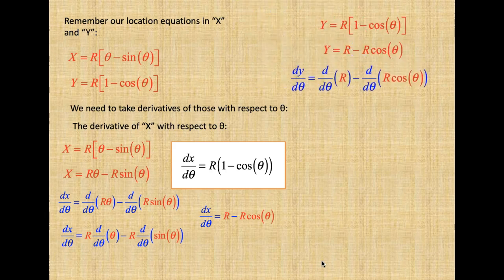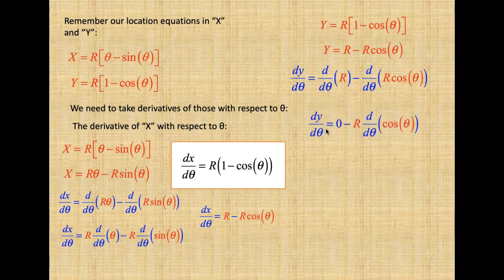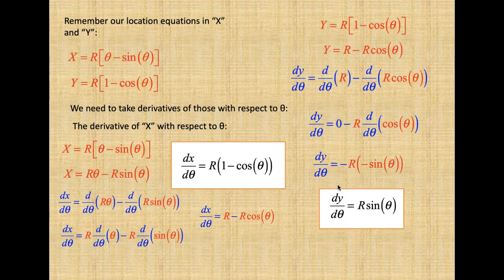For y, we have y = R(1 − cosθ). Multiplying through: R − R·cosθ. Taking the derivative of both sides, the derivative of R with respect to θ is 0, and the derivative of R·cosθ is R·sinθ, but with a negative sign — minus times minus gives plus. So dy/dθ = R·sinθ.